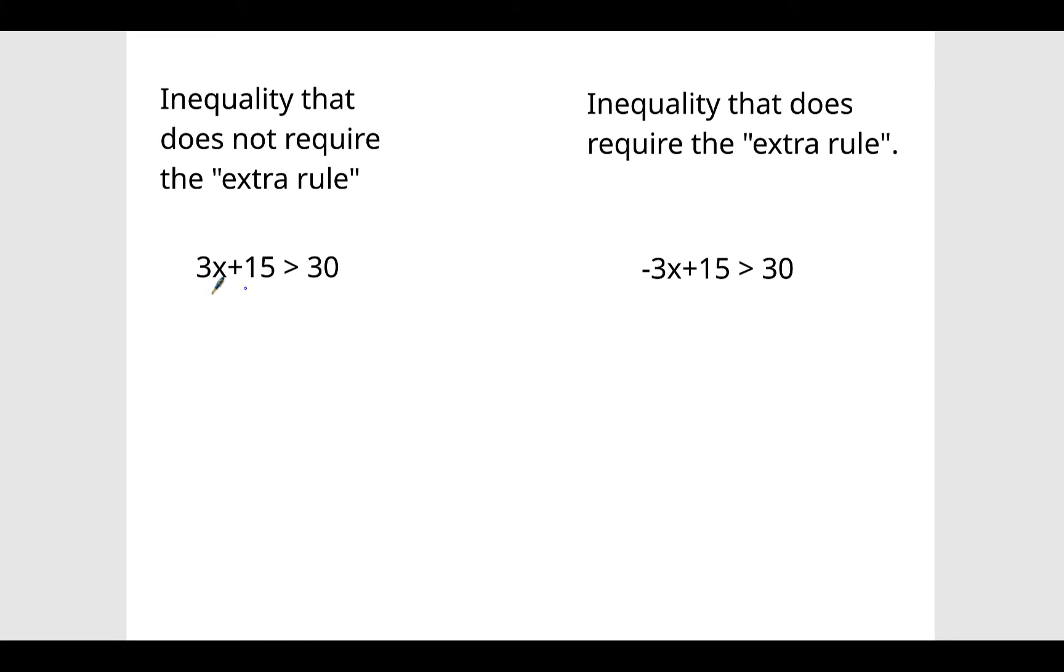Notice the similarities. So if 3x plus 15 is greater than 30, this one is negative 3x plus 15 is greater than 30. So I'm doing this so that you can see when we use the rule and when we don't. What's happening to x here is it's having 15 added to it and it's being multiplied by 3.